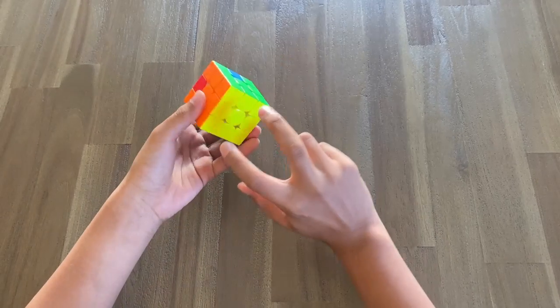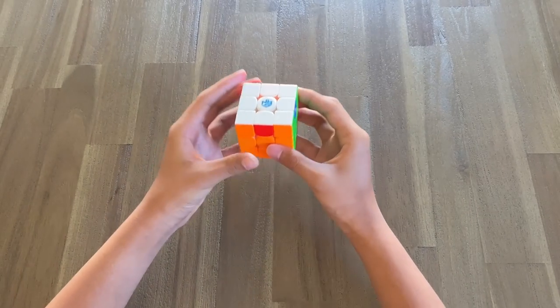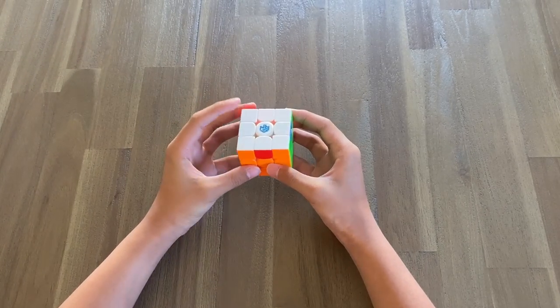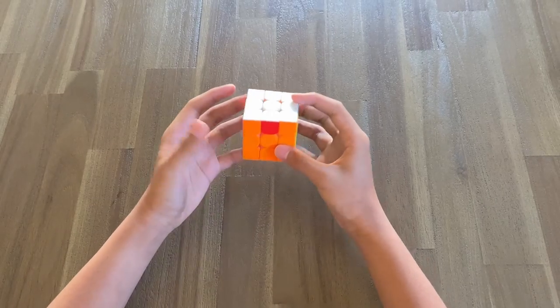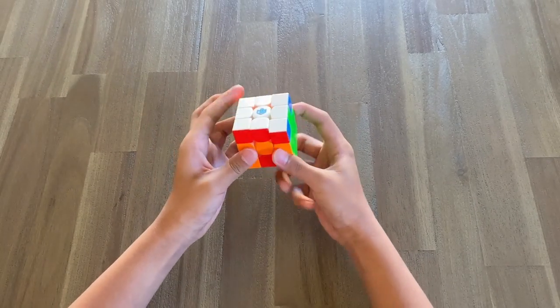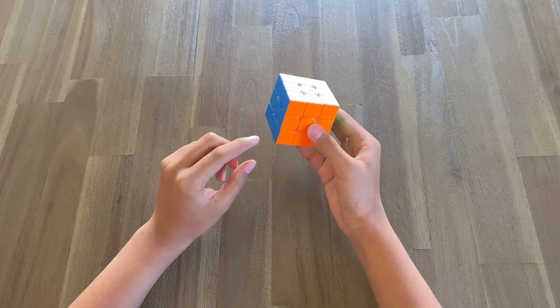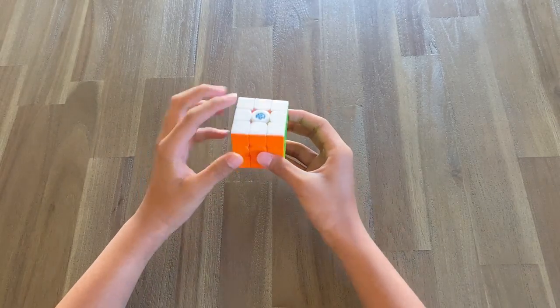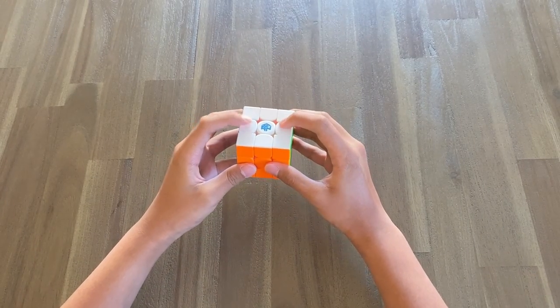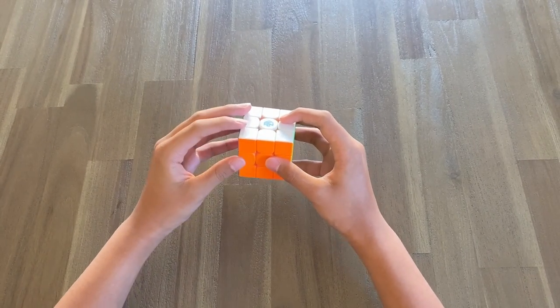However, what if we want to swap these two as well as these two? We can't just directly use the H perm, can we? Because that's not swapping the edges we want. However, what we can do is move these two edges up to where we want to swap them. Let me give you an example.